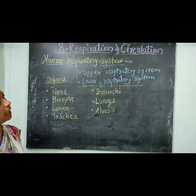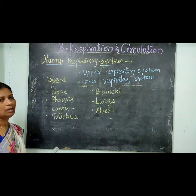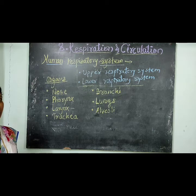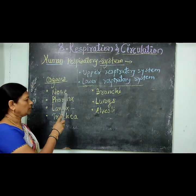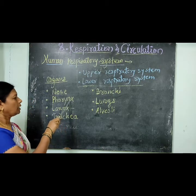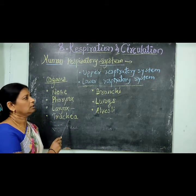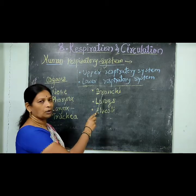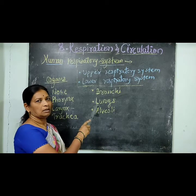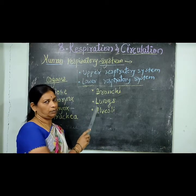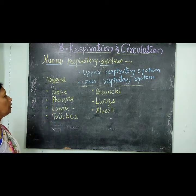With the help of a diagram, we study the human respiratory system which consists of a number of organs such as nose, pharynx, pharynx leads into larynx, larynx leads into trachea, trachea leads into bronchi and bronchioles, then lungs and then pulmonary. Then we study one by one all these organs.